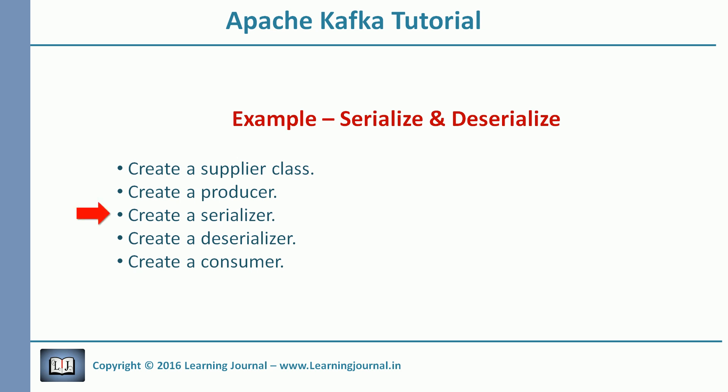Third, we will create a serializer to convert a supplier object into a byte array. Then we will create a deserializer to convert a byte array back into a supplier object. Kafka doesn't know how to serialize and deserialize our object, so we have to create a serializer and deserializer. Finally, we will create a consumer. This consumer will read supplier objects from Kafka and print the details on the console. Then we will execute our example and observe all of this working together.